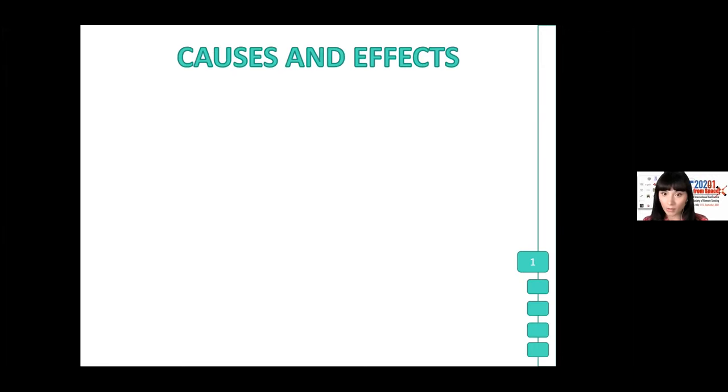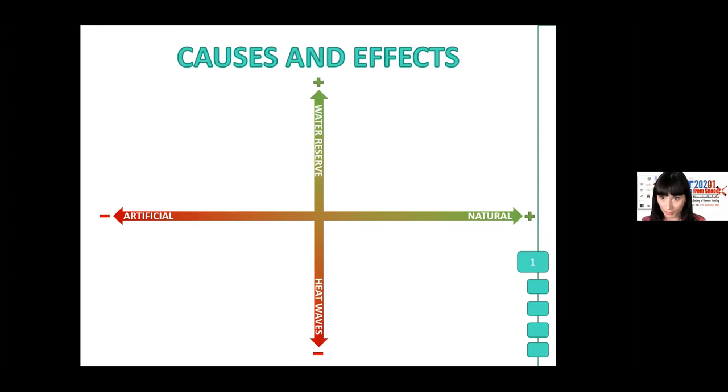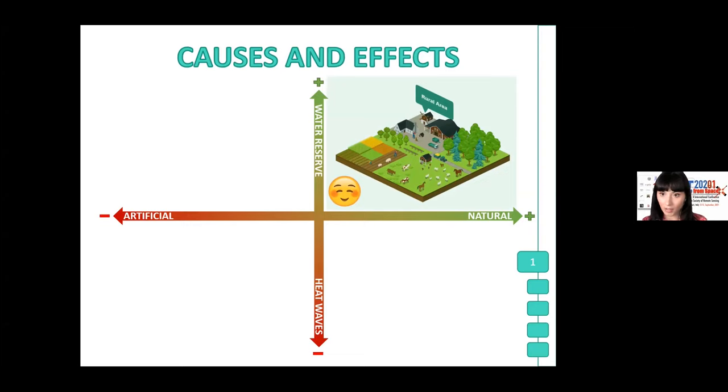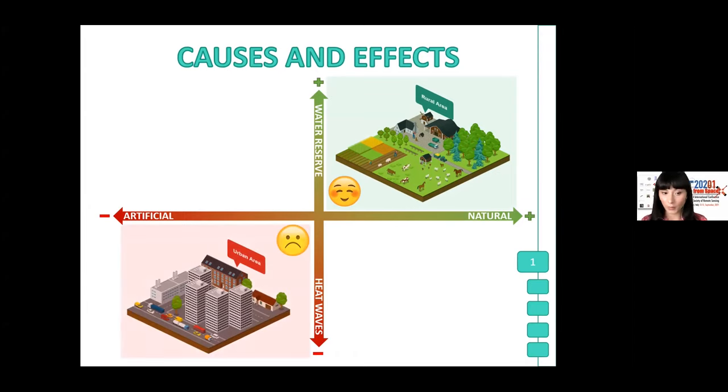Before this phenomenon, in these peri-urban areas, we had very good natural aspects and a good water reserve, like this illustration, and then the urban expansion generated a lot of problems. We have had an increase of the artificiality and the temperature in the city, and subsequently generated the heat-waves phenomena.